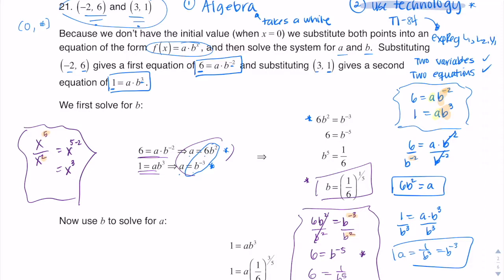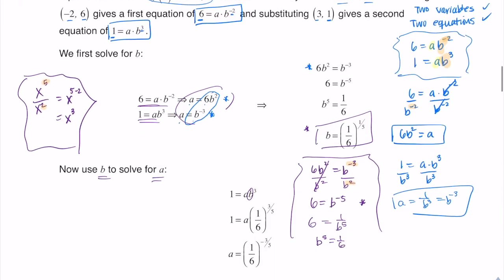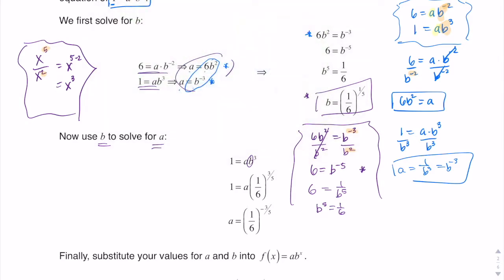You could substitute it into either original equation — you have a lot of options. I want to stay consistent with the work I did, so I'm going to use this b value to solve for a. I'll substitute b equals one sixth to the one fifth into the equation one equals a times b cubed. Since b in and of itself is one sixth to the one fifth, I now have to cube it. When you have a power raised to a power, you multiply the exponents, and three times one fifth is three fifths.